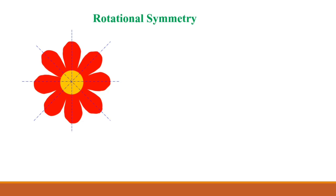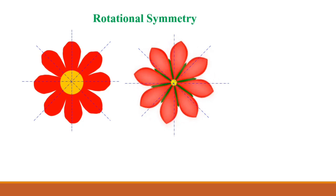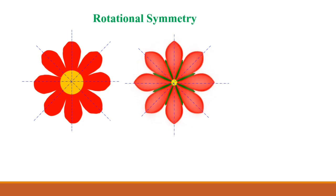It may not look the same in all positions, but in some positions it looks the same. So here we see that when we rotate this flower, it will look the same. Let's also take the lines of symmetry — when we rotate this one, it will also look the same, just like the previous flower. So these two flowers show rotational symmetry.